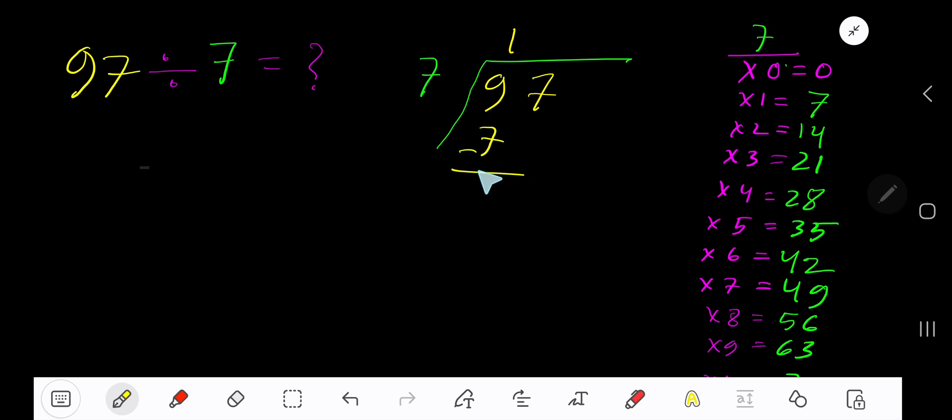Subtract. Bring down another digit. 7 goes into 27 how many times? 4 times would be 28, which is greater, so 3 times. Write 3 here. 3 times 7 is 21. Subtract. You are getting 6.